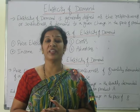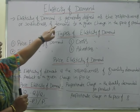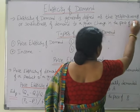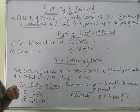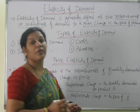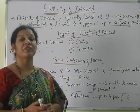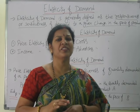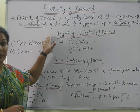How can we define elasticity of demand? Elasticity of demand is generally defined as the responsiveness or sensitiveness of demand to a given change in the price of a product. The change in the price of a product makes a difference in the demand — that is what we call elasticity of demand.